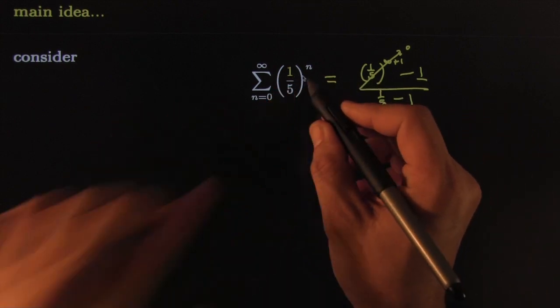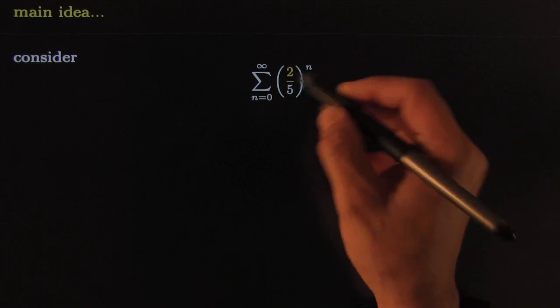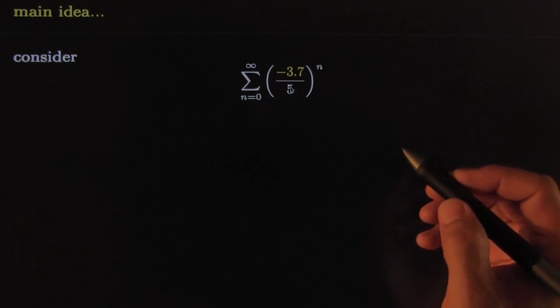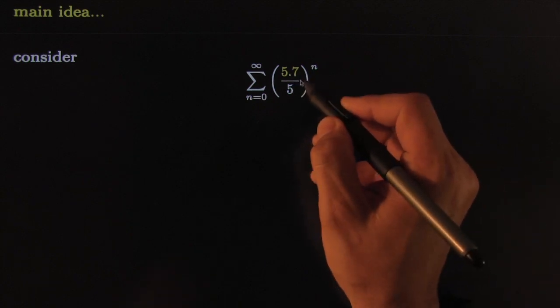What if you change that one to something else? What if that one was a two—does this still converge? Well, obviously it does because the absolute value of two is less than one. What if it was negative two? What if it was three? What if it was 3.7? What if it was 5.1?